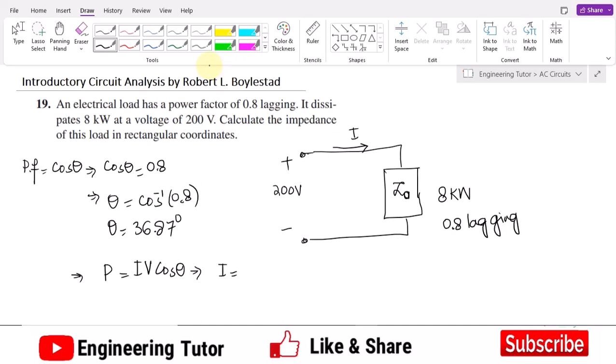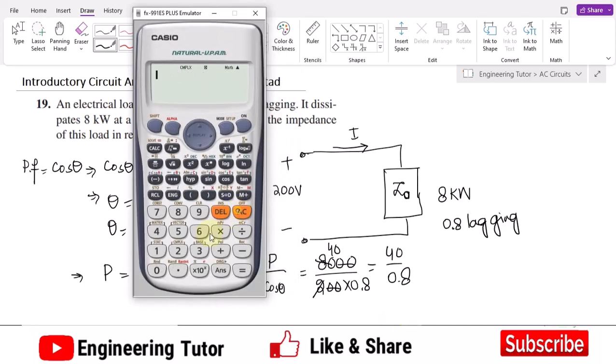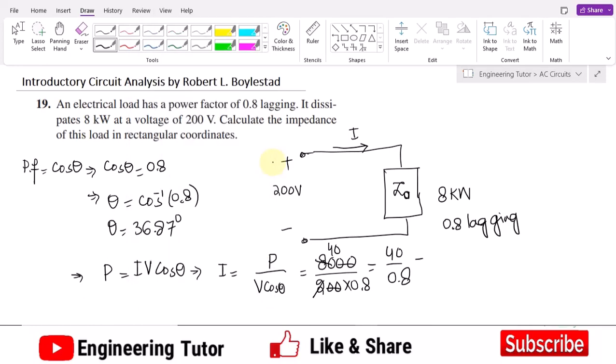So all the quantities are known except this current. In order to find the current, it would be P divided by V cosine of theta. Putting values here, it would be 8000 divided by 200 multiplied by 0.8. So 40 divided by 0.8, this is now 50 amperes. The magnitude of the current is 50 amperes.